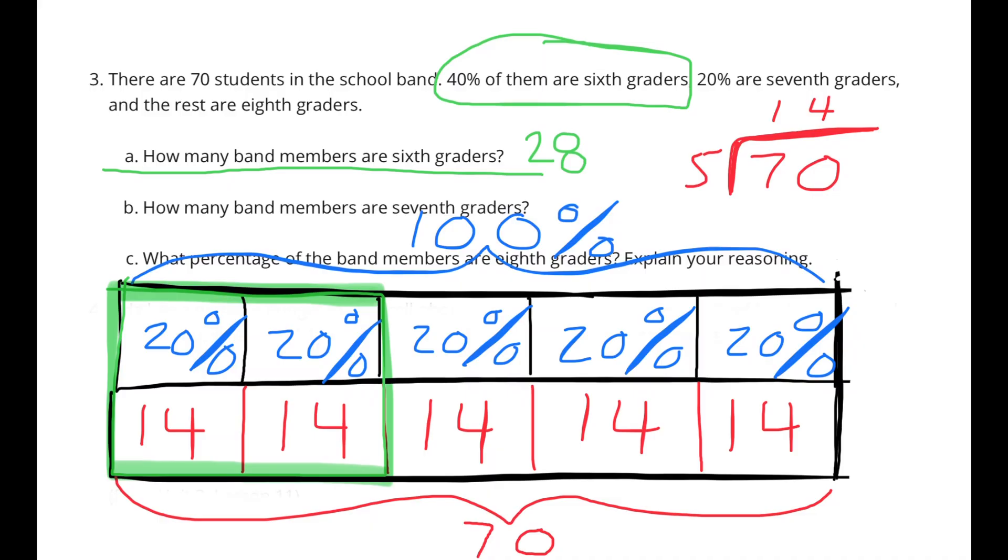How many band members are 6th graders? I made a tape diagram with 100% of the students represented on the top and all 70 students represented on the bottom. The information mentioned that 20% of the students are 7th graders. So I divided 100% by 20% and I got 5. So I divided my tape diagram up into 5 sections and I made each section worth 20%. 70 divided by 5 is 14. So each section is also worth 14 students. How many band members are in the 6th grade? 28. The first two boxes, 20% plus 20% equals 40%, and 14 students plus 14 students equals 28. So 28 of the students are in 6th grade.